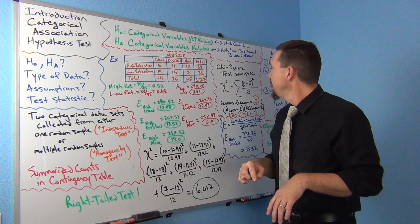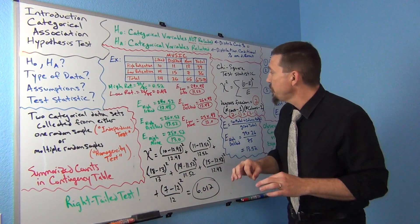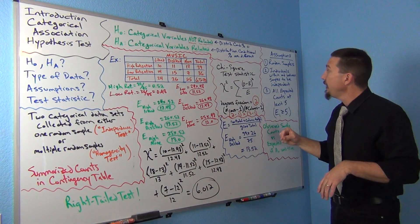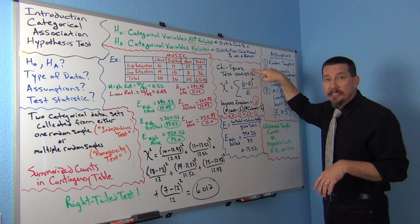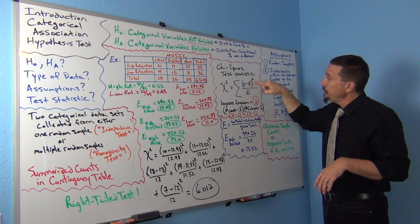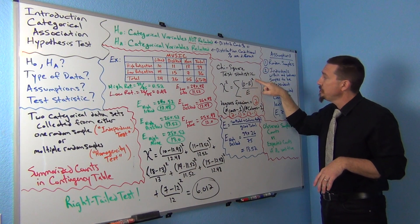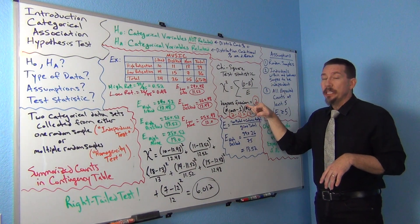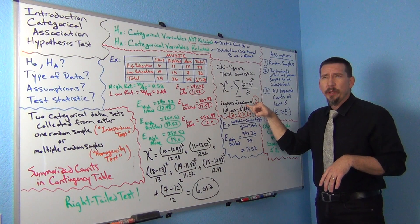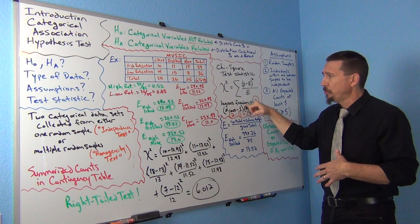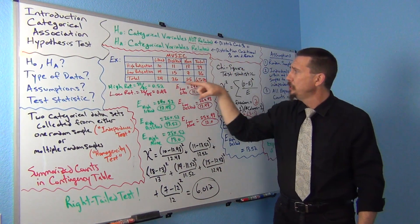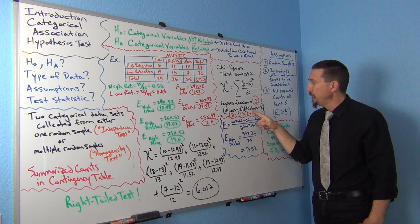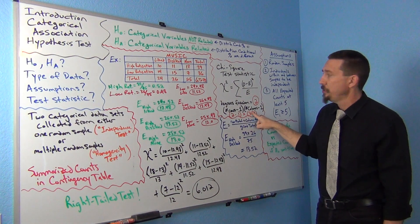Our assumptions and test statistic are actually the same as what we used in the goodness of fit test. We're going to use the chi-square test statistic again — the sum of the observed counts minus the expected counts, squared, divided by the expected counts. The degrees of freedom formula will be a little different though. In goodness of fit we used k minus one, but now with rows and columns in a table, we use the formula: rows minus one times columns minus one. That's the degrees of freedom for a categorical association test.